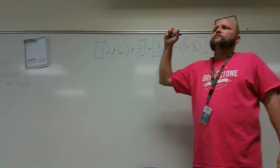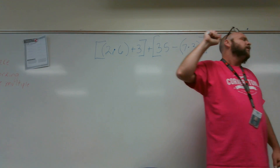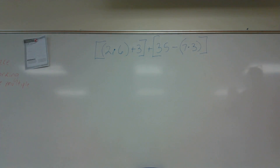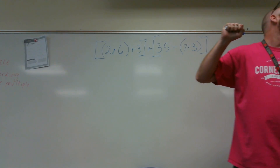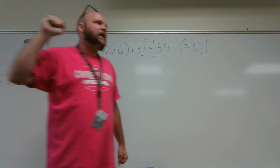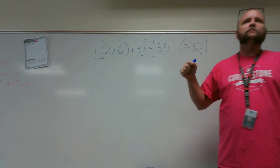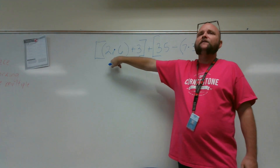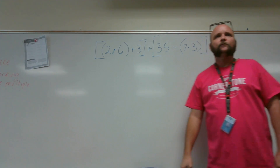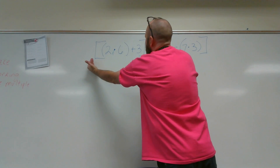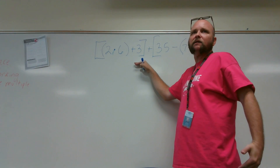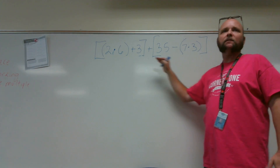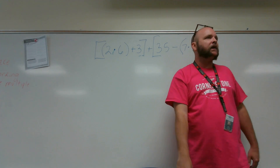Think time. Think about this question: where are we going to start on this particular problem? Delaney, where are we going to start? I'm going to start on 2 multiplied by 6. Good. We need to find the product of 2 and 6. Why? Because it's in brackets. Good — it is the first bracket. We're going to do everything in the first bracket because that comes before the second bracket.